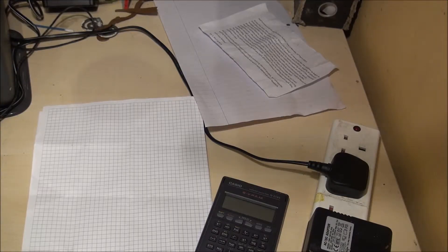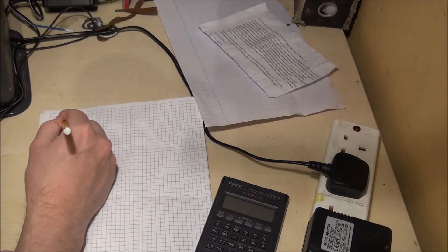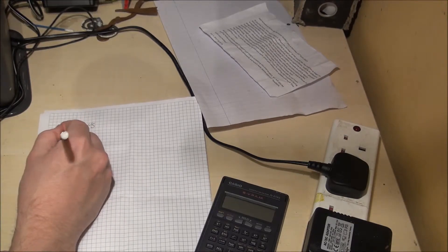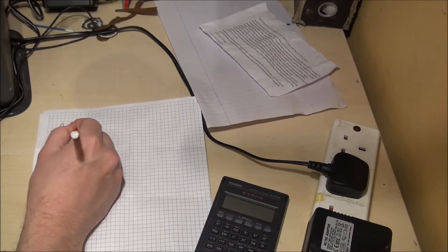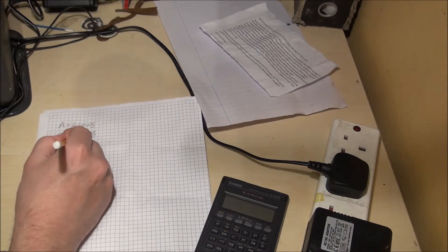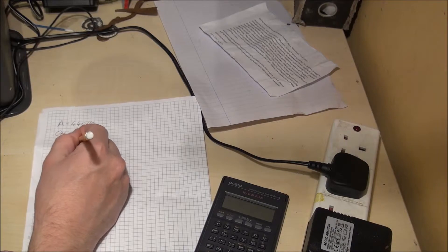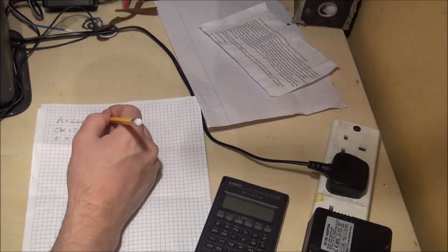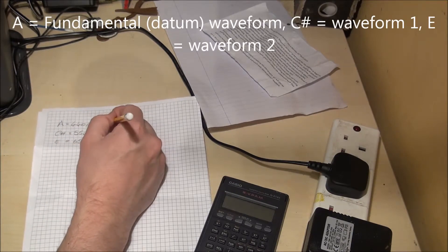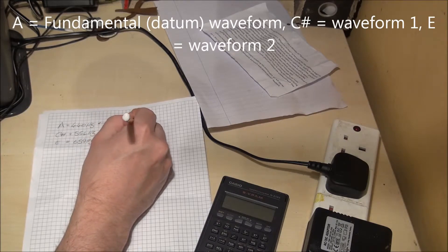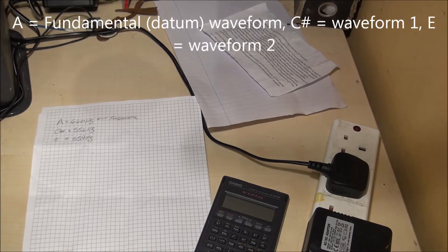We're going to start on paper with the frequencies of the three notes. Roughly, A is equal to 440 Hertz, C sharp is equal to 554 Hertz, and E is equal to 659 Hertz. We're going to call A the fundamental and all of our measurements will be based from the fundamental — in engineering terms that's what we call our datum point.